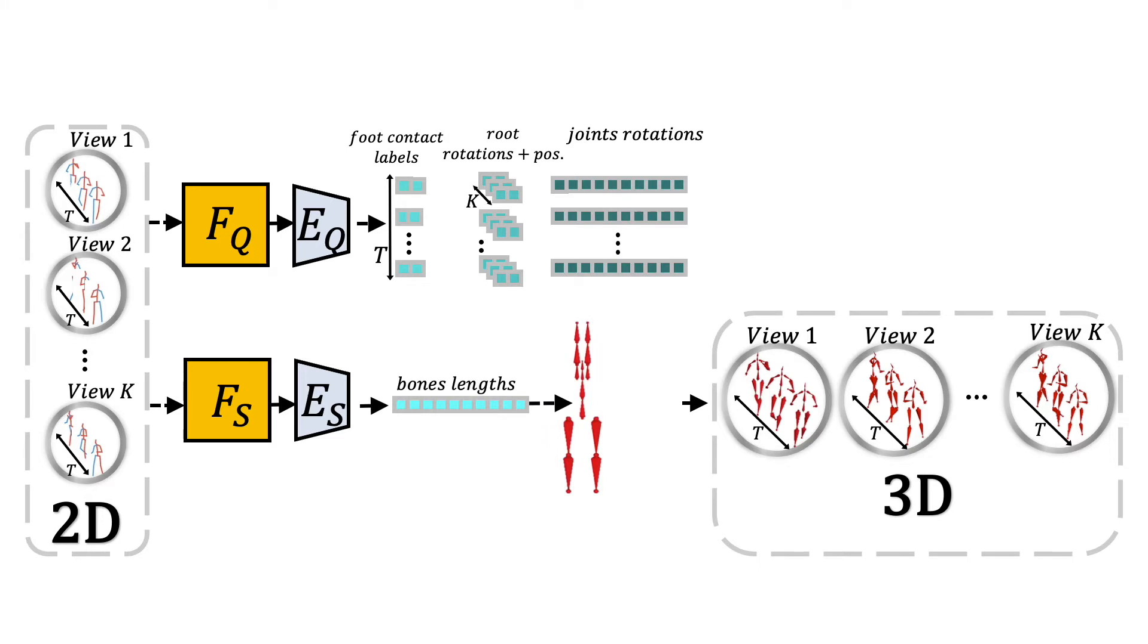The static encoder, ES, outputs a single symmetric 3D skeleton, represented by its bone lengths. We employ a discriminator that brings the temporal differences of rotation angles near the manifold of true rotations. The output of both encoders is used in a forward kinematics layer that computes the estimated 3D joint positions related to each view. These 3D positions are compared to the ground truth during loss computation.